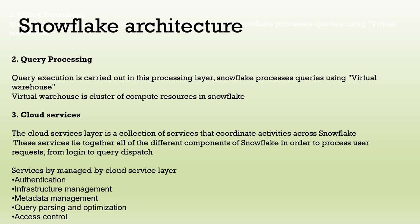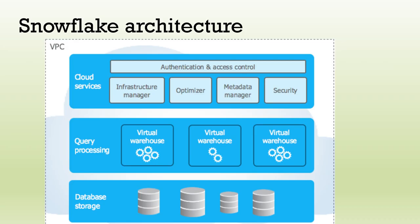The services managed by the cloud services layer include authentication, infrastructure management, metadata management, query parsing and optimization, and access control. To summarize visually: there are a number of virtual warehouses at the query processing layer, a database storage layer where data is stored in cloud storage, and cloud services including a security optimizer, metadata manager, authentication, and access control. This is all about Snowflake architecture.